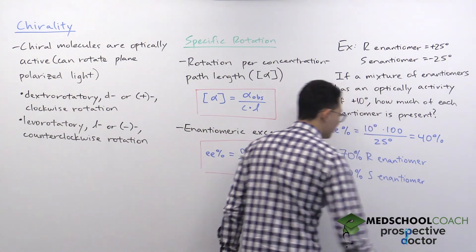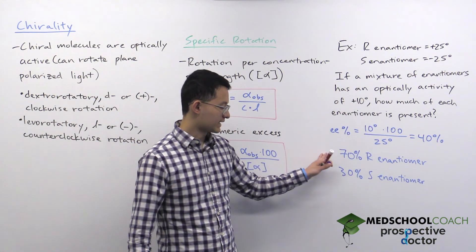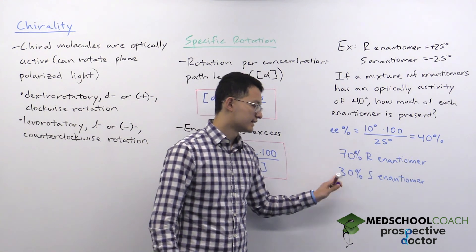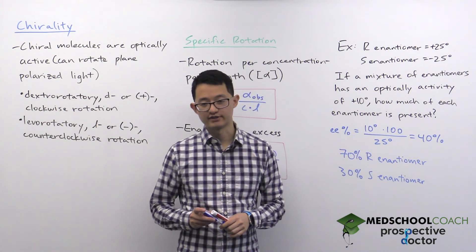So we can see now how we have a 40 percent excess, essentially 40 percent more of the R enantiomer than the S enantiomer in solution.